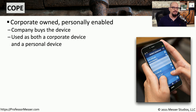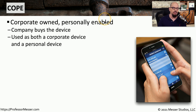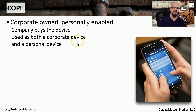A similar deployment type is called COPE — corporate owned, but personally enabled. You're still using the same single device for both corporate use and personal use, but instead of you purchasing a device and bringing it to work, your office is purchasing the device and letting you use it. This means you'll use it as both a corporate device and a personal device, but you only have to carry around one device.